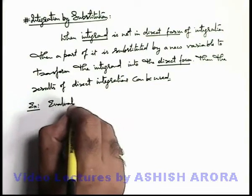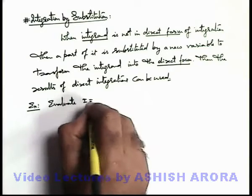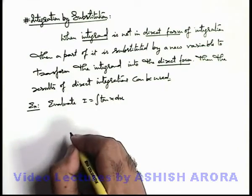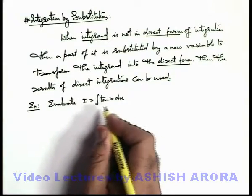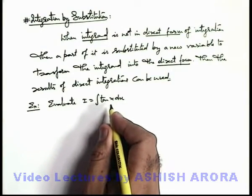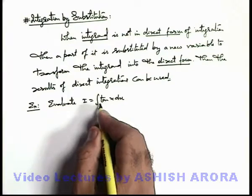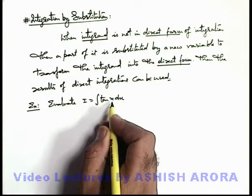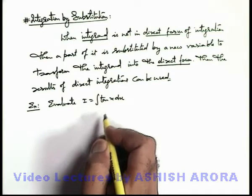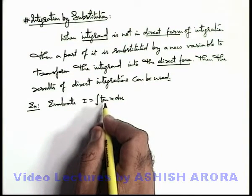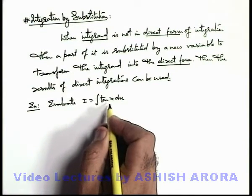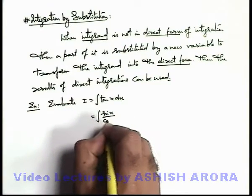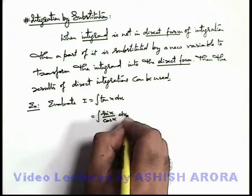We are required to evaluate I equal to integration of tan(x) dx. Certainly, till now we are not having any direct form of integration for tan(x) — the result would be one that when differentiated we should get tan(x). So it can be written as integration of sin(x) by cos(x) dx.